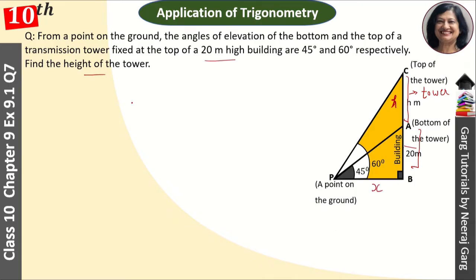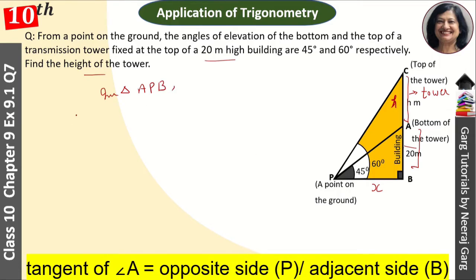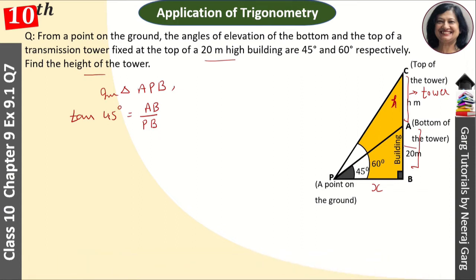First, in triangle APB, we have trigonometry ratio tan 45 degree that is equal to AB upon PB. The perpendicular upon the base. Tan 45 degree value is 1, so 1 is equal to AB which is 20, and PB we have taken as X. So X is equal to 20 meter. This is our value of X.